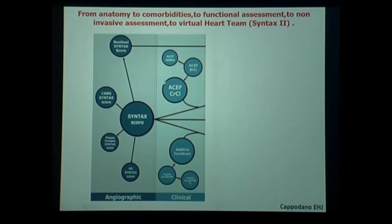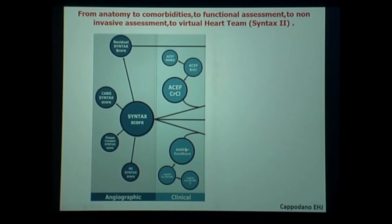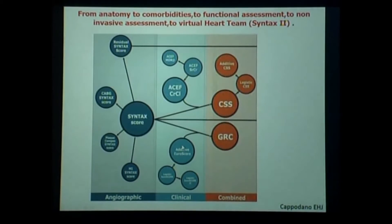Then in Italy, Ranucci, a surgeon, said that in surgery, if you collect the age, the creatinine clearance, and ejection fraction, you can predict quite well the outcome of surgery. And on the other hand, in Catania, Davide Capodano said if you add the EuroSCORE to the anatomic Syntax score, you will have a much better prediction of what happens with surgery and PCI.